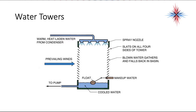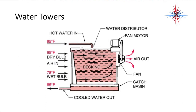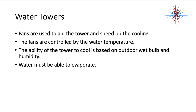As water evaporates off the tower it takes heat with it. Because of this, make-up water is needed — when the water level drops too far, a float drops and allows make-up water into the system. Some systems use fan motors to help pull air through. Cooling towers depend on temperature and humidity; there must be low enough humidity for the water to evaporate and dissipate heat. Fans are controlled by the water temperature.